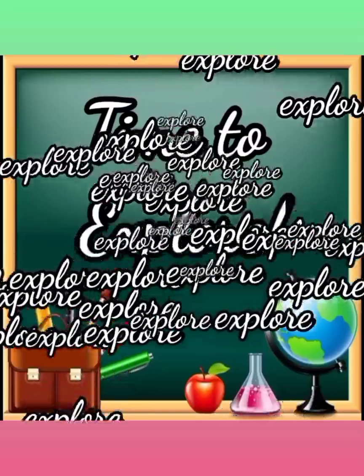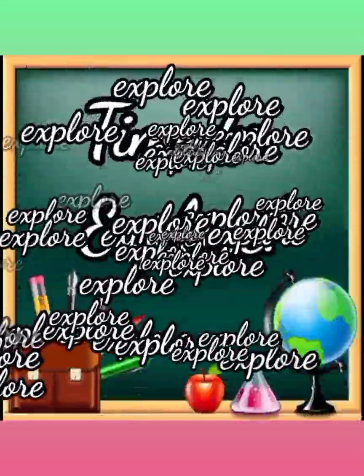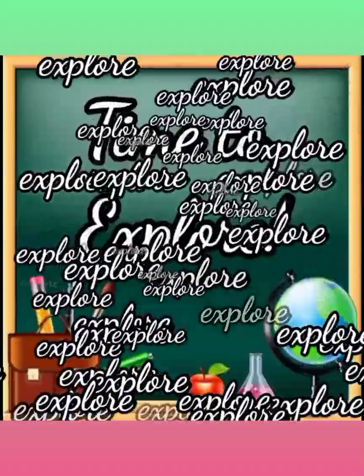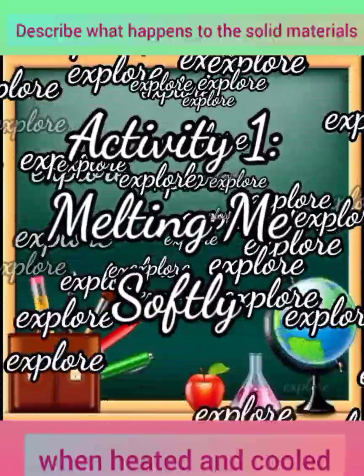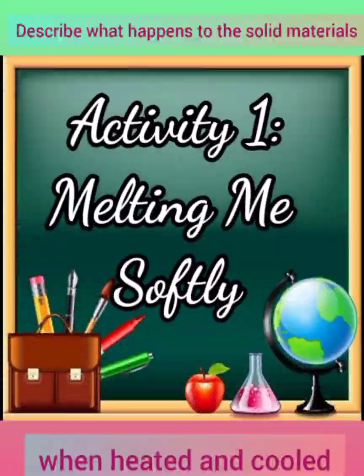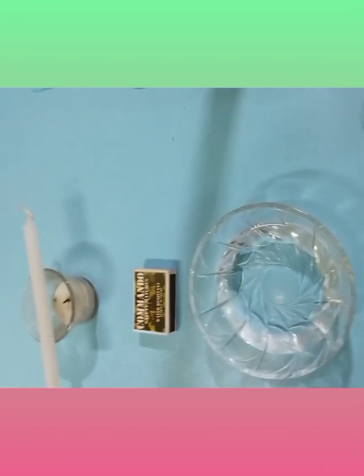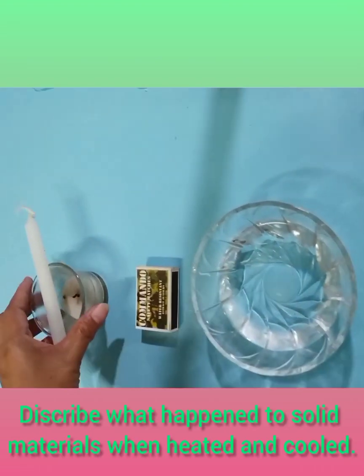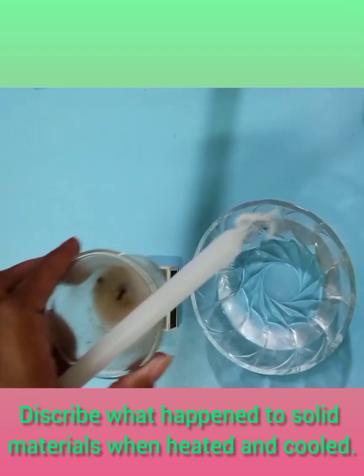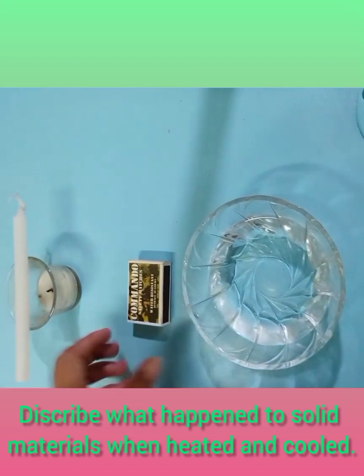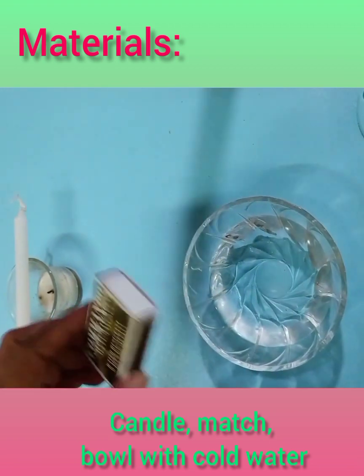Good job kids! Let's zoom in and explore! Experiment time! Activity 1: Melting Wax Softly. After this activity, you will be able to describe what happened to solid materials when heated and cooled.